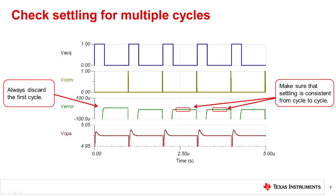Another verification is to make sure that the settling doesn't change across multiple cycles. You should always discard the first cycle as this contains startup errors. Some designs will have a long-term settling error that creates inconsistent results from sample to sample. Ideally, you want all conversion results to be consistent after the first cycle.